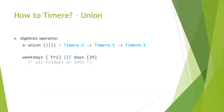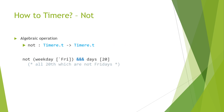Then we have union, which just merges the intervals derivable from the two expressions. So here it's like all Fridays or the 29th of any month. We also have not, which is complement — it flips a particular expression. So in this case, we have not Friday, which is equivalent to picking out all the weekdays which are not Friday. And combined with intersection, this overall reads: all 20ths which are not Fridays.